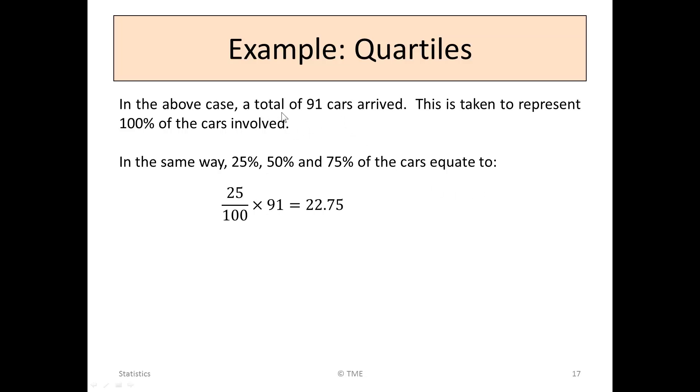In the above case, we had a total of 91 cars. This is taken to represent 100% of the cars. If that's the case, 25%, 50%, and 75% of the cars can also be calculated. For example, 25%, or 25 out of 100 of 91 cars, would be 22.75 cars. 50% of the cars, 50% of 91, is 45.5. And 75%, or 75 over 100, of the total number of cars, would be 68.25. We might be interested in, when were there more than 22 cars in the car park? When were there more than 45? When were there more than 68?